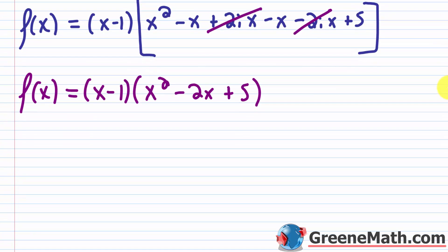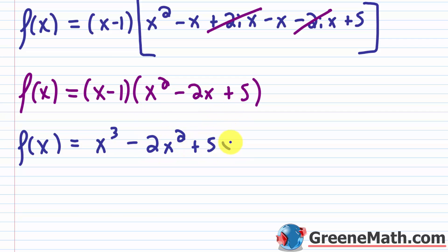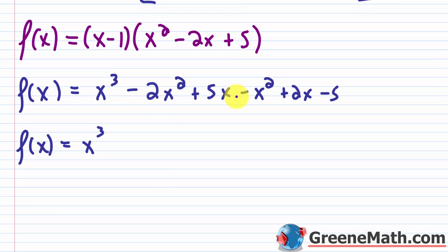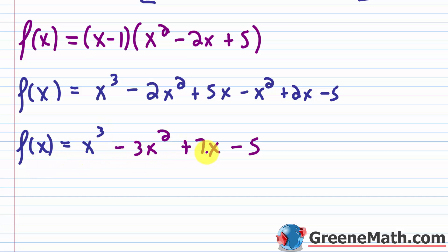Now multiplying out (x minus 1)(x squared minus 2x plus 5): x times x squared is x cubed, x times negative 2x is minus 2x squared, x times 5 is plus 5x. Then negative 1 times everything changes signs: minus x squared, plus 2x, minus 5. Combining like terms: x cubed, negative 2x squared minus x squared is negative 3x squared, 5x plus 2x is plus 7x, and minus 5. So f of x equals x cubed minus 3x squared plus 7x minus 5.